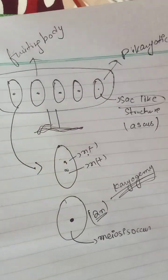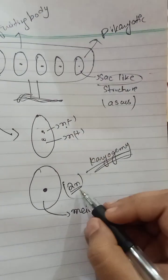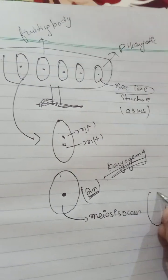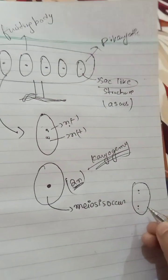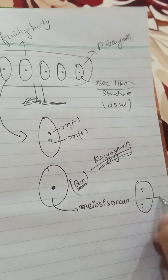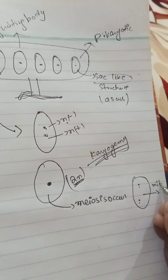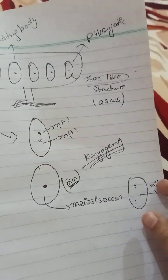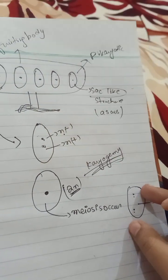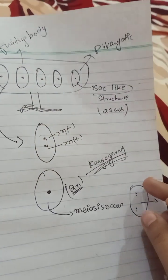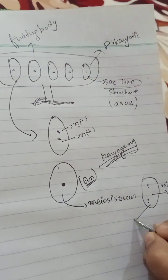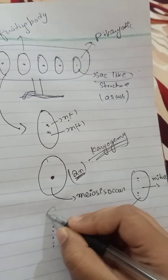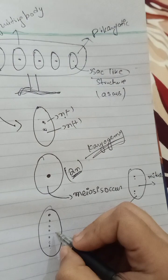During meiosis, the chromosome number will be halved, producing two of male and two of female type. Then mitosis will occur. In mitosis, the chromosome number remains the same but the cells divide, resulting in eight nuclei — so four become equal to eight ascospores inside each ascus.